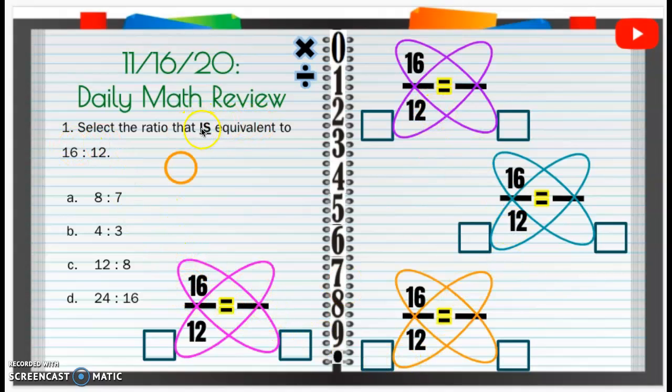So we're going to figure out which is equivalent to 16 to 12. So the first ratio, I just took this in colon form and I put it in fraction form. So 16 to 12, 16 to 12. So A, I'm going to put here 8 to 7. All right, so what we're going to have is 8 here to 7 here. All right, I'm going to set them all up first.